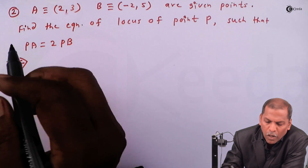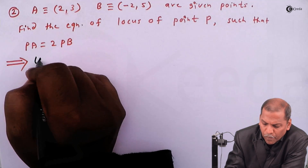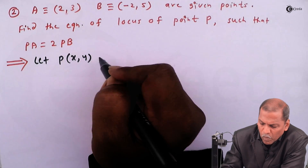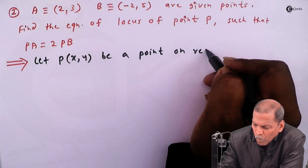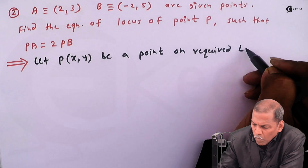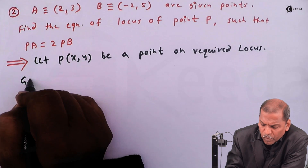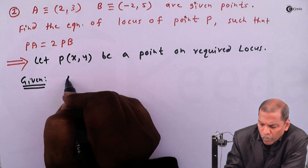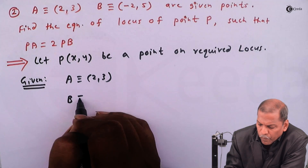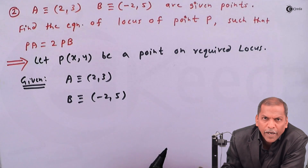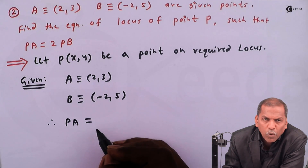The solution is quite simple. First of all, we consider: let P(x, y) be a point on the required locus. Then given A is equivalent to (2, 3), B is equivalent to (-2, 5), and the important condition is PA equals 2 times PB.